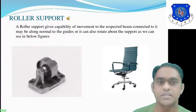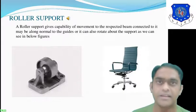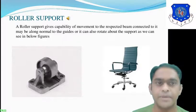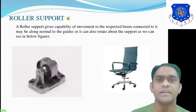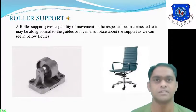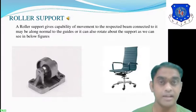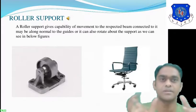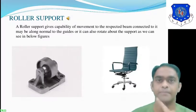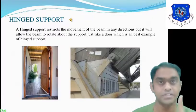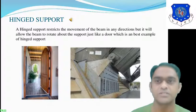Roller support — examples include a wheelchair or a hospital stretcher. Roller support gives the capability of movement to the beam connected to it, either along normal to the guides or it can rotate about the support. In simplified terms, automobile vehicles under which the supports are always rollers are known as roller supports, which provide free movement of the vehicle or structure.